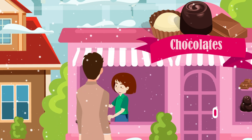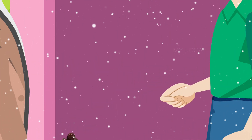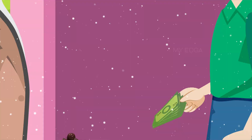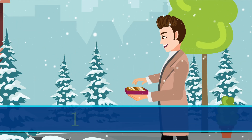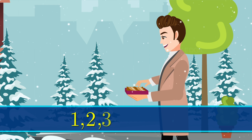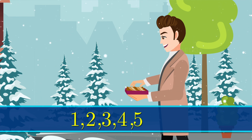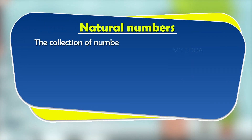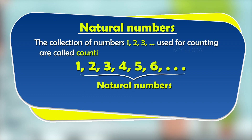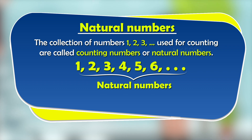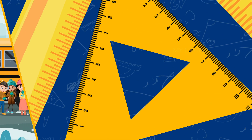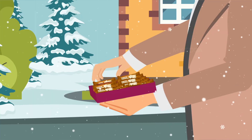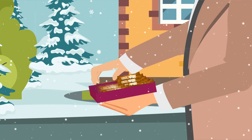On an excursion to Shimla, a teacher bought 20 chocolates from a shop. He paid money and started counting the chocolates: one, two, three, four, five, six — up to 20. The collection of numbers one, two, three, and so forth used for counting are called counting numbers or natural numbers.